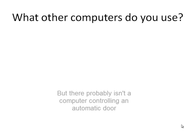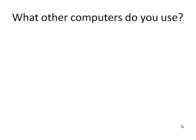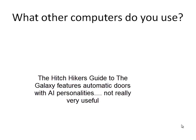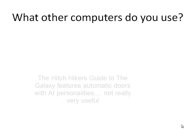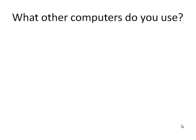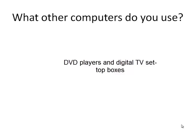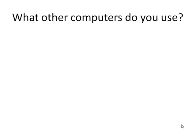Automatic doors probably wouldn't have processors — they are very simple sensors and circuits that probably don't qualify as computers. DVD players and set-top boxes — your Freeview box — think about what they have to do: they receive an encrypted digital signal and have to decrypt it, so there's a fair bit of processing that goes on. There are processors in things like set-top boxes and DVD players — a huge amount of stuff around your house.